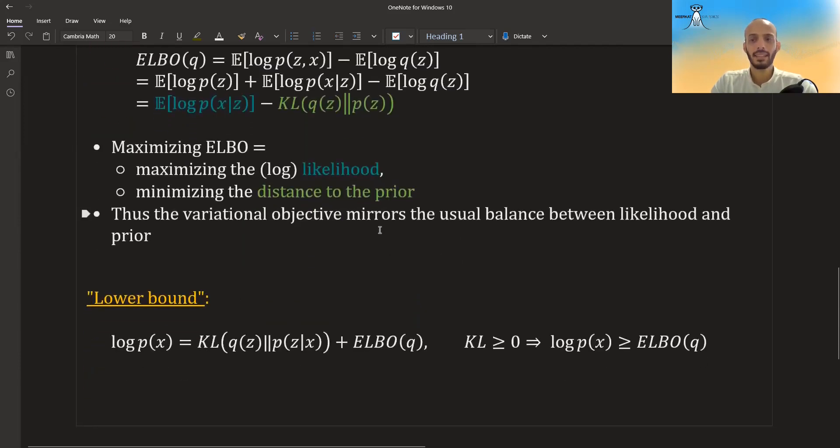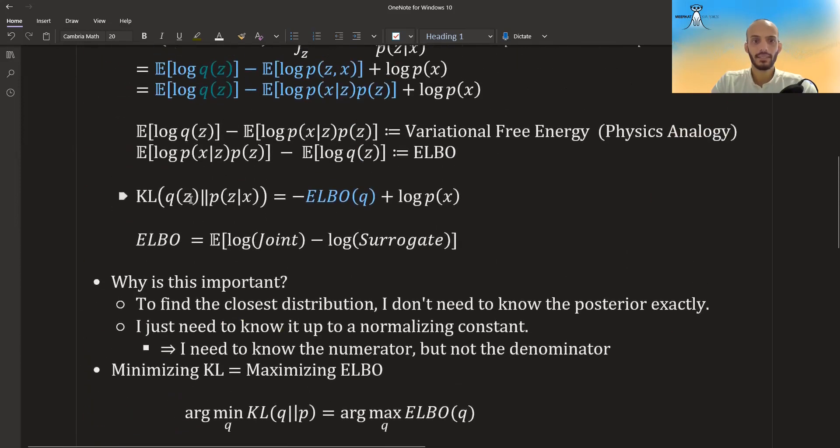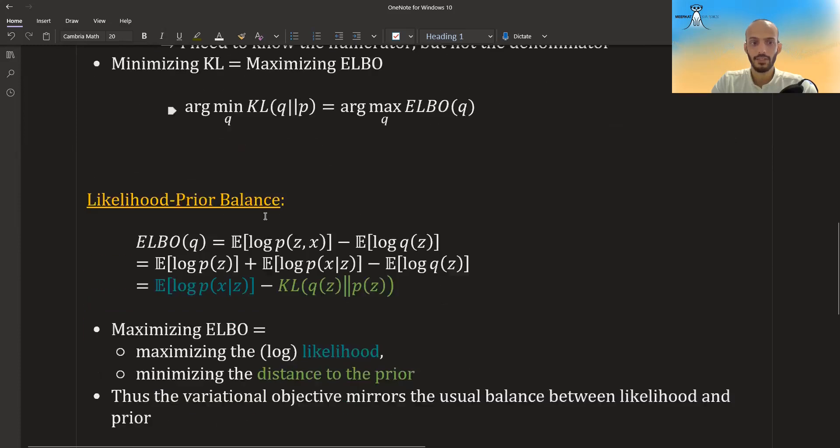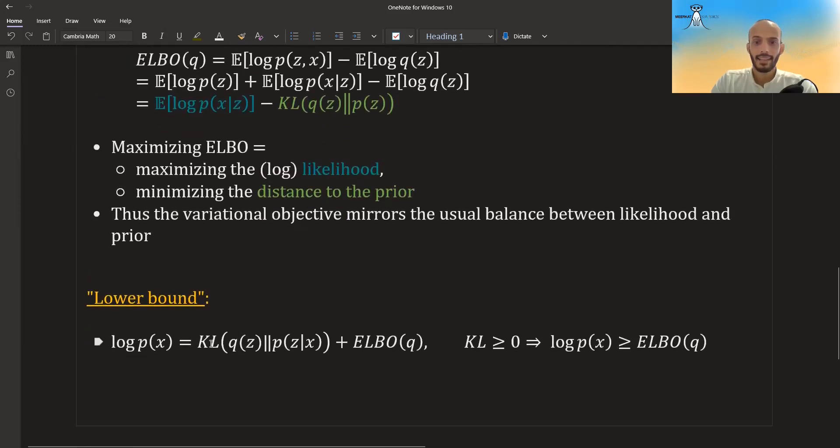And the reason that the evidence lower bound is called the lower bound is because if we go back to this equation over here, we can just move the ELBO to the other side, and then we get the log evidence is equal to the ELBO plus the KL divergence. And the KL divergence is always positive, right? It's never negative. So in that sense, the ELBO is always below the evidence of our data, the log evidence. So in that sense, it's a lower bound of our evidence, and this is why it's called the evidence lower bound.